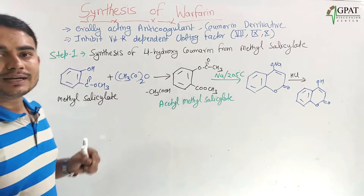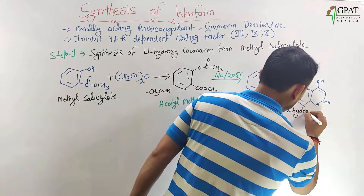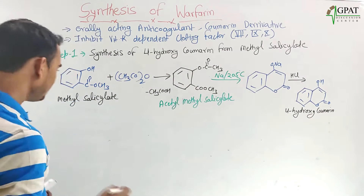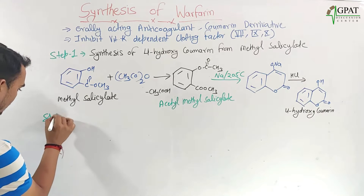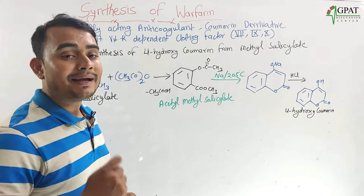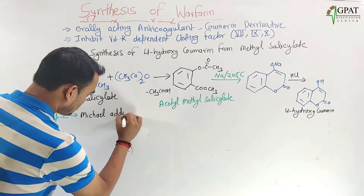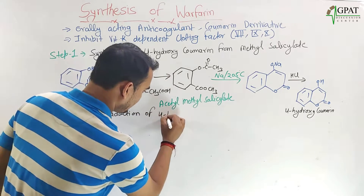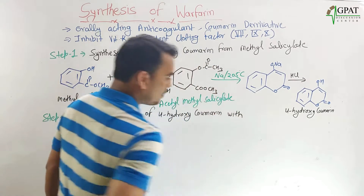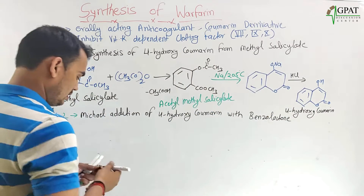In step one, the target was to synthesize 4-hydroxycoumarin from methyl salicylate, and here we have obtained 4-hydroxycoumarin. Now, in the second step, a Michael addition is carried out — Michael addition of 4-hydroxycoumarin with benzalacetone.